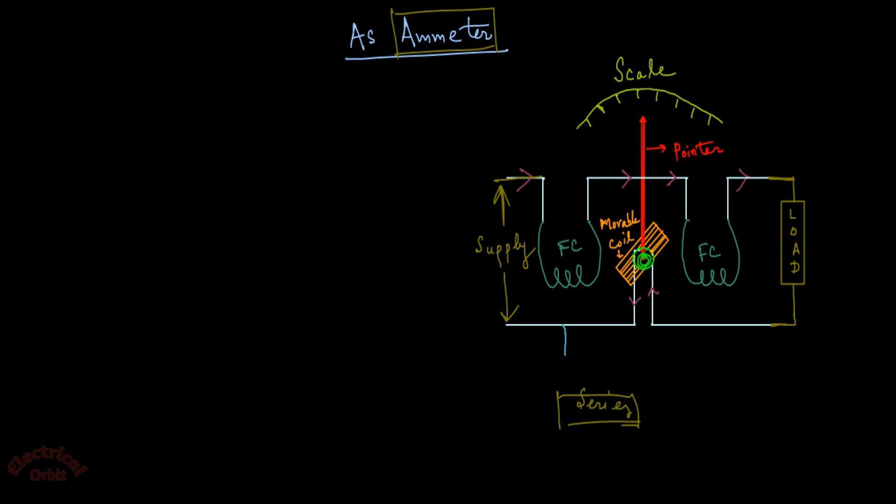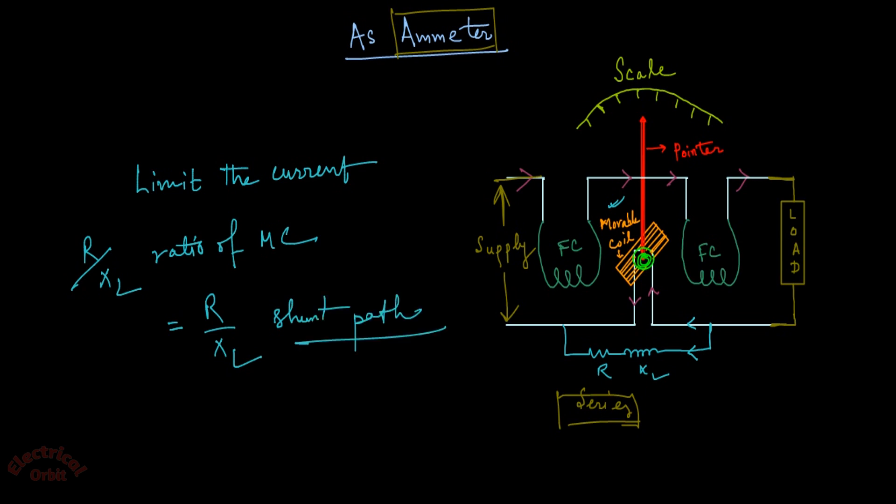The only thing we need to take care of here is that we have to connect a combination of resistance and inductance in parallel with this moving coil. Why? Because it helps us to limit the current. If any high current comes, or if you want to use it in a higher range value, the current is divided in these two parallel paths in a certain proportion such that the R by XL ratio of moving coil is almost equal to the R by XL ratio of this shunt path. In that way you can use it in various ranges of measurement.